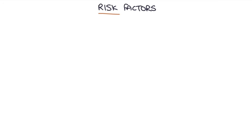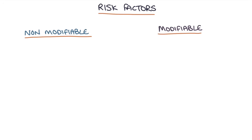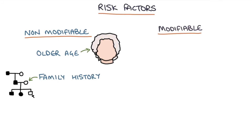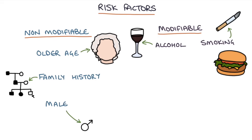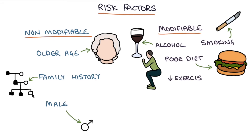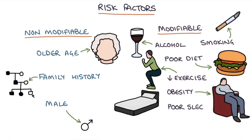What are the risk factors for developing atherosclerosis? It's important to break these down into modifiable and non-modifiable risk factors. There's nothing we can do about the non-modifiable ones, but we can act on the modifiable ones. Non-modifiable risk factors include older age, family history, and being male. Modifiable risk factors include smoking, alcohol consumption, poor diet — such as high sugar or trans fat diets without enough fruits, vegetables, and omega-3s — low exercise, obesity, poor sleep, and stress.